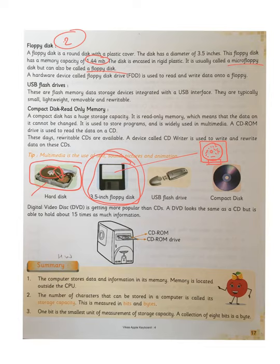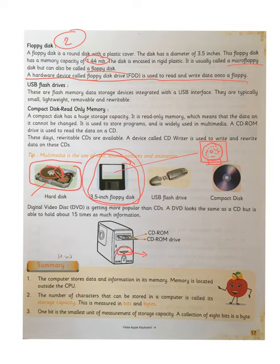To read and write data onto a floppy, you need a hardware device called FDD — a floppy disk drive. If the computer does not have one, you cannot read or write onto the floppy. One major disadvantage of the floppy was that it was very easy to damage. The metal clip could move and expose the magnetic tape, corrupting the data. The lifespan of a floppy was short, which is why people stopped using it.